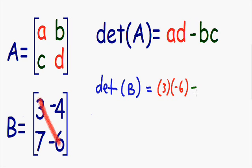And we need to subtract B times C. And B times C is our green diagonal. Our green diagonal are the numbers 7 and negative 4. We need to multiply these two numbers together, so I'm going to multiply 7 times negative 4.